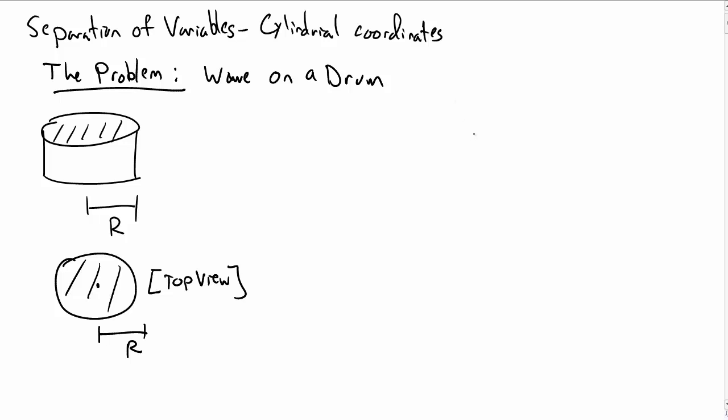Let's consider a separation of variables problem involving cylindrical coordinates. The problem is, let's think about how a wave on a drum behaves, a circular drum.